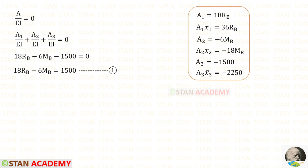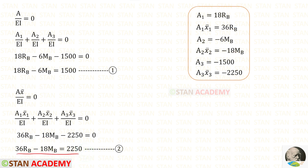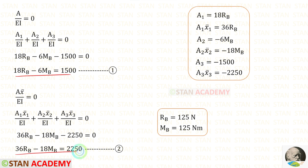We know that the sum of areas divided by EI is equal to 0. Applying the values of Area 1, Area 2, and Area 3, we can form this equation — let us call it Equation 1. Also, we know that the sum of area × x̄ divided by EI is equal to 0. Applying Area 1 × x̄1, Area 2 × x̄2, and Area 3 × x̄3, we form Equation 2. After solving these two equations, we will get RB and MB.